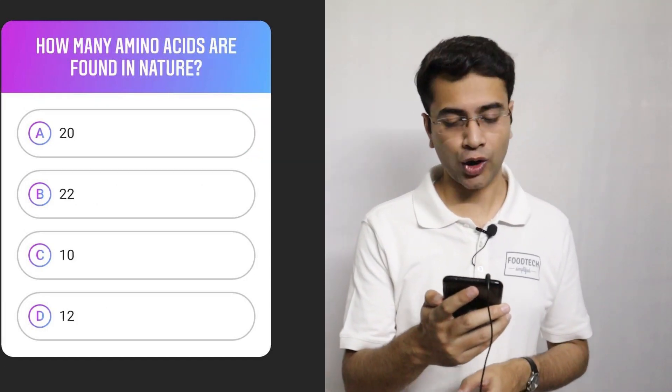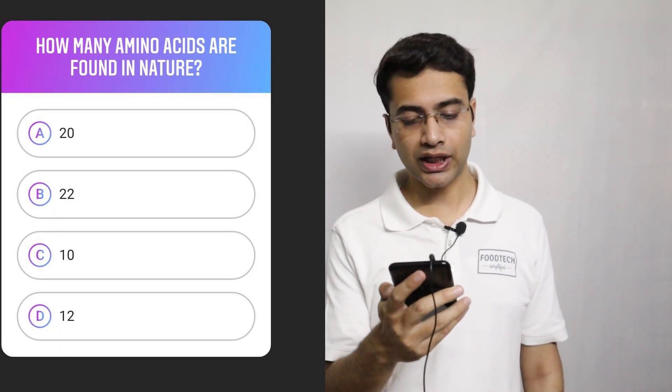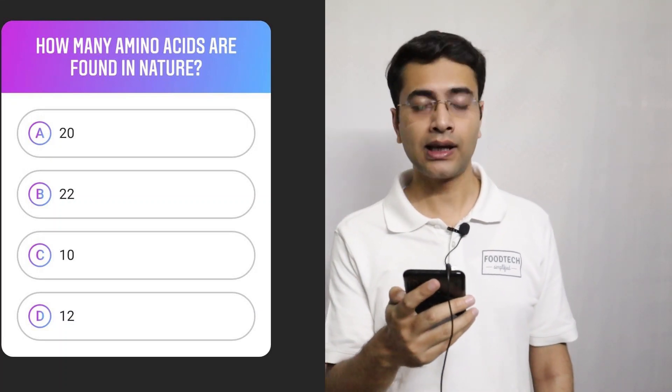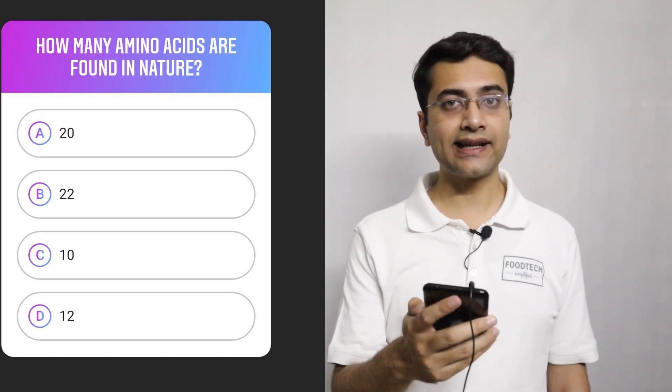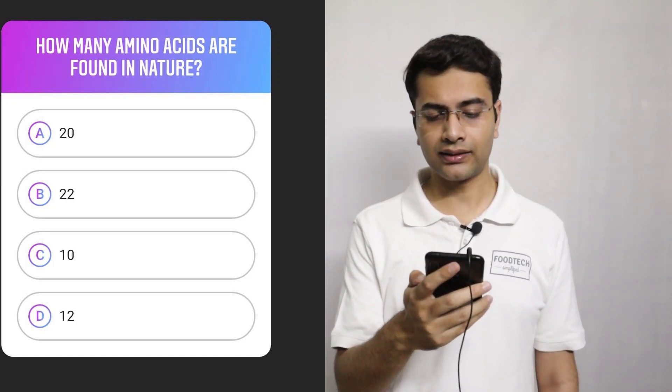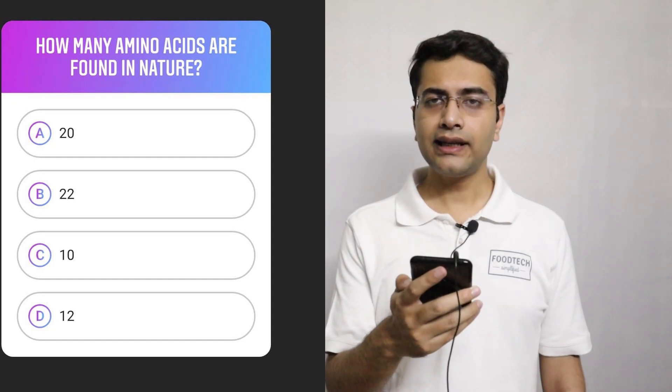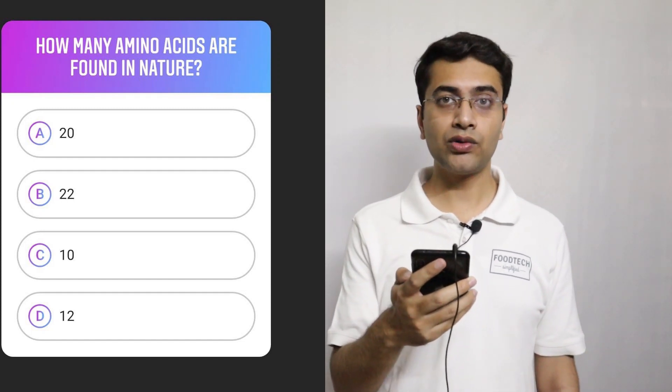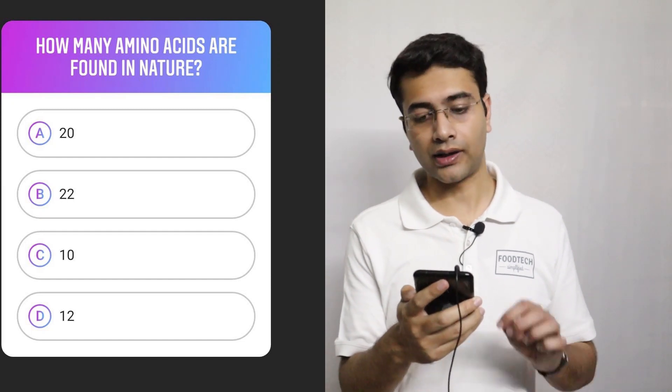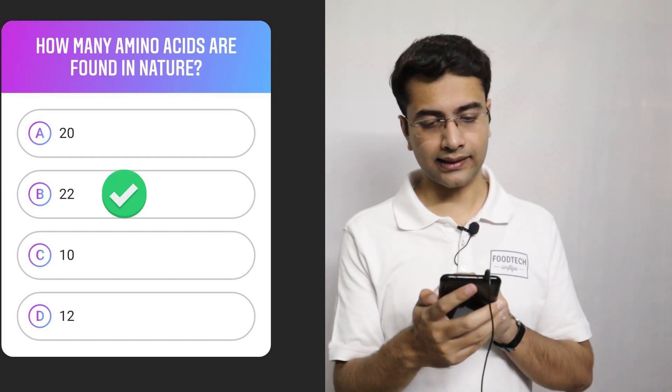The next question. How many amino acids are found in nature? Option A 20, option B 22, option C 10, and option D 12. Now in my Instagram stories, I made a mistake. I mentioned 20 as the correct answer but 20 is not the correct answer. Recently, two more amino acids have been found and there are total 22 amino acids which are found in nature now. So 22 is the correct answer.